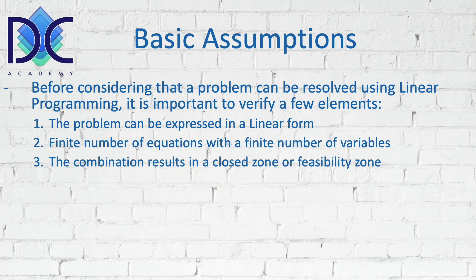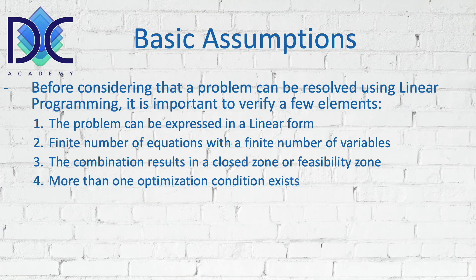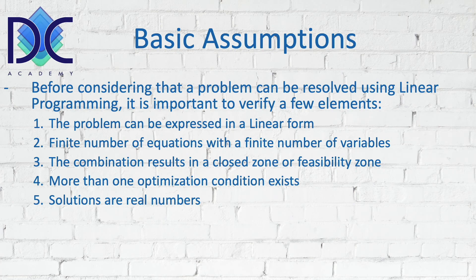Another element is that the result of the constraints leads to a closed zone in which we find acceptable solutions. All the elements in that zone comply with all the constraints, and we call that zone the feasibility zone. We also need more than one optimization condition — at least two constraints to define the problem as a linear programming problem. The solutions are real numbers, though in some cases real numbers are not acceptable and we then have to deal with integers, which is a different type of application.